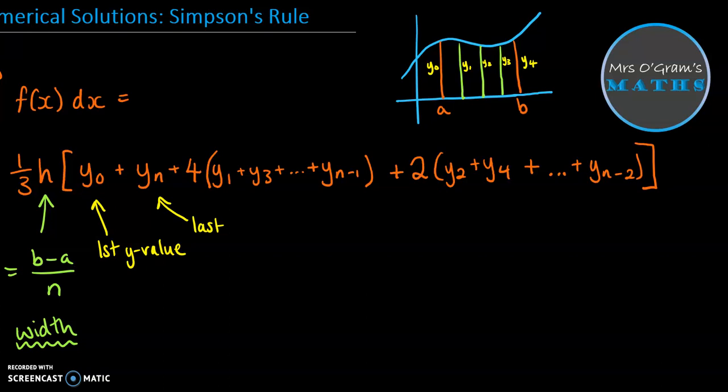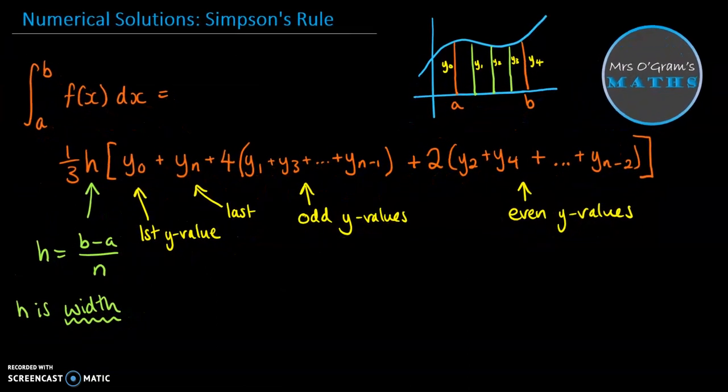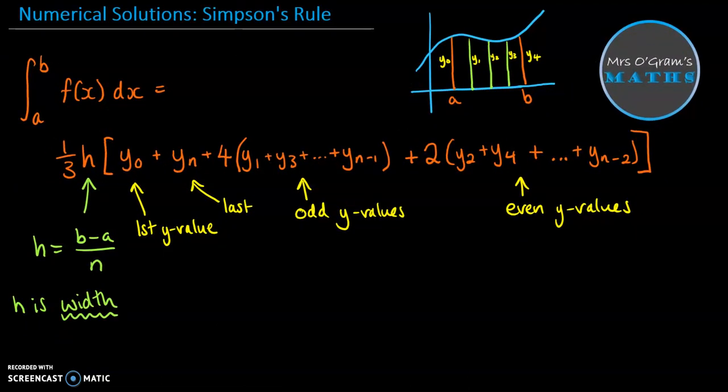And then this one takes all of the even numbered ones. So the first even one and the last even one in between those two end strips, of course, and then multiply them by two. So these are the odds and these are the evens. You put it all together in this formula. Add up the evens, times it by two. Add up the odds, times it by four. Add on the last, add on the first, times it by a third of the height. Let's take a look at this with a properly worked solution.